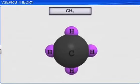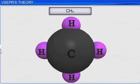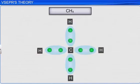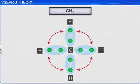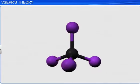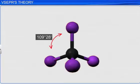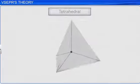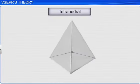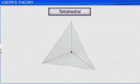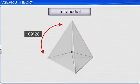In a methane molecule, four hydrogen atoms are bonded to one central carbon atom. Since the electron pairs have the same charge, they repel each other and try to stay as far away from each other as possible. As a result, all four hydrogen atoms arrange at four corners of a tetrahedron, lying at equal distances away from each other. Hence, methane has a tetrahedral shape. In the methane tetrahedron, the bond angle is 109 degrees 28 minutes.